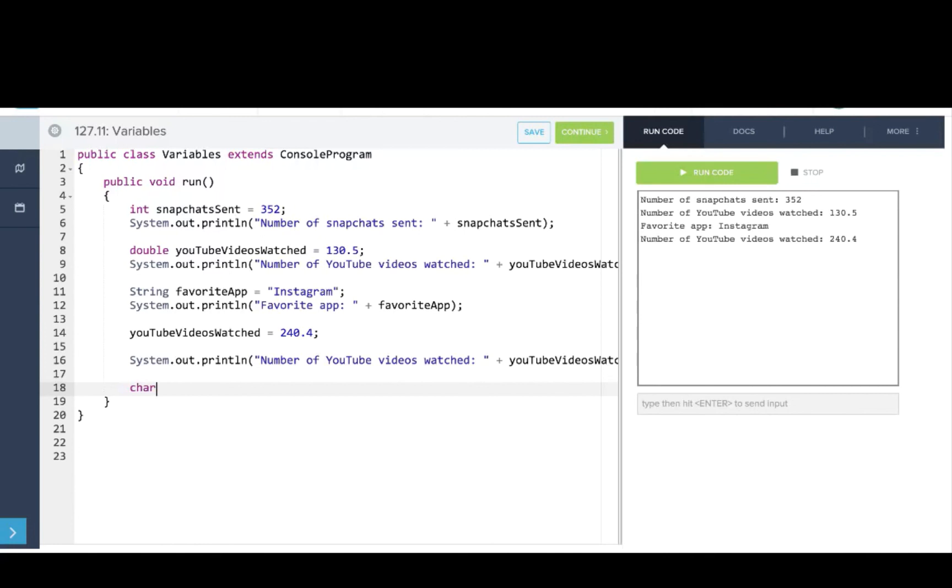Let's print out some other variables. We can say char firstLetter equals a, and note that has single quotes. We can println the first letter plus firstLetter. Let's run that. There you go, this is how we start to use variables. Remember, we can declare variables, print out variables, and then change the value of variables. Now you'll have a chance to play around with this.